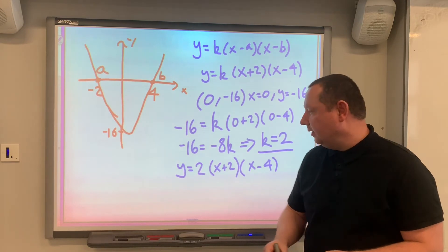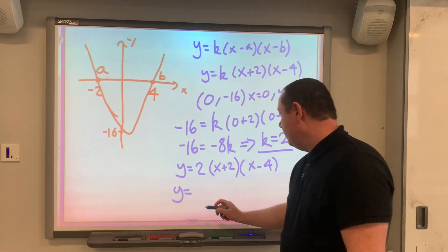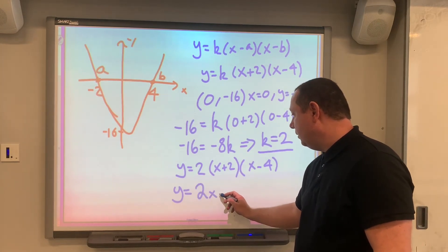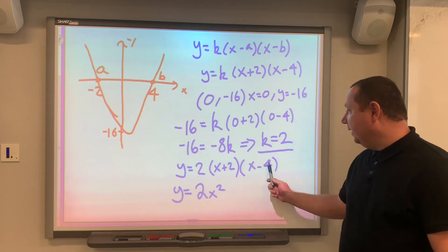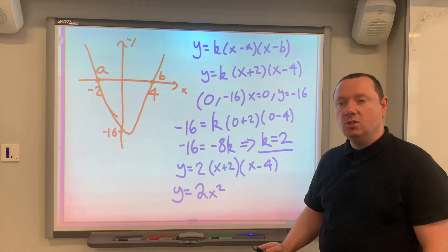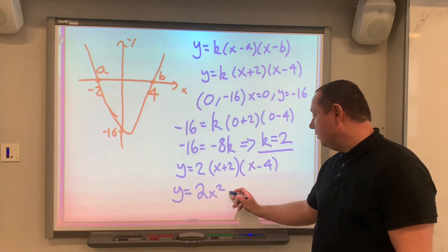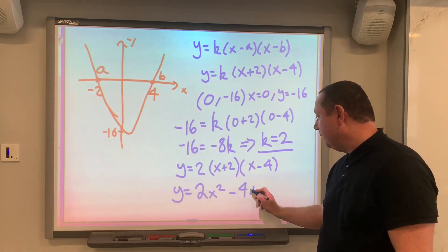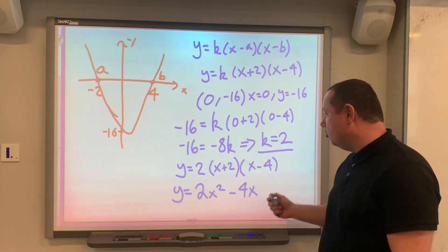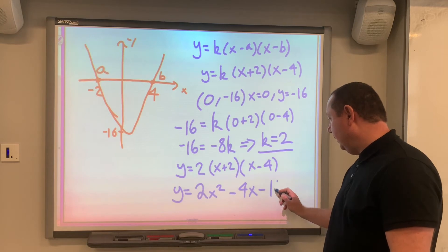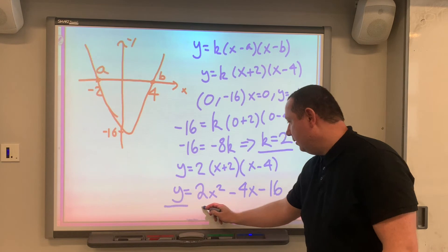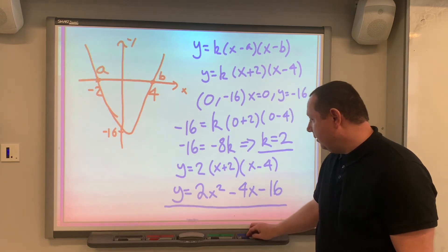Doing that: x times x is x squared, so I've got 2x squared. -4x plus 2x is -2x, times another 2 is -4x. And 2 times -4 is -8, times 2 is -16. So we get y equals 2x squared minus 4x minus 16, in the form ax squared plus bx plus c, and we're done.